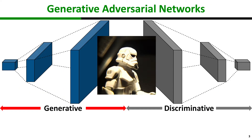GANs combine game theory and deep learning to generate synthetic data from the same distribution as the original training data set, in a setting in which a generative model competes against a discriminative model aiming to fool the discriminative model in discerning between the synthetic data and original data.